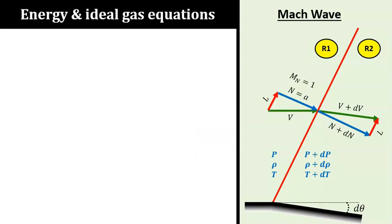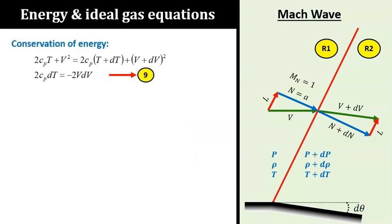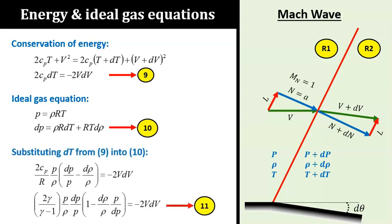Next, we will look at our conservation of energy. This form in equation 9 is already familiar to us. The ideal gas equation will also be used in its differential form, as shown in equation 10. When we cancel the dT term in the ideal gas law by using the dT term from the energy equation and using the specific heat relationships, we will arrive at equation 11. Again, I suggest you to work out the algebra to make sure that you understand how to get to equation 11.